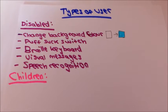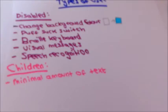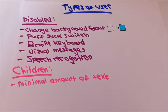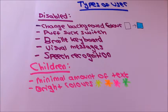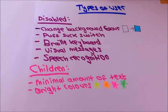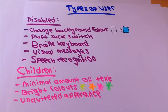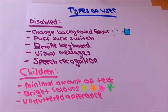Now we move on to the types of HCI that would be needed if a child was to use the system. There should be a minimal amount of text on the screen as the child may not be able to read. Bright colors should be used to attract the child's attention. There should be an uncluttered appearance which makes it easier for the child to decide where they want to go.